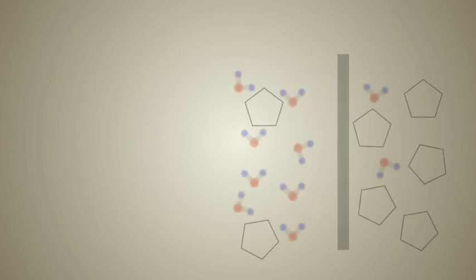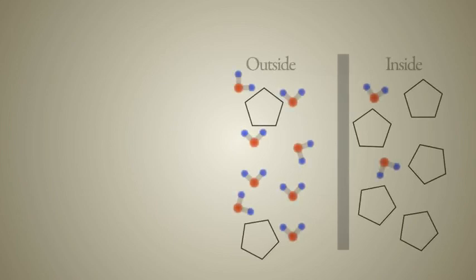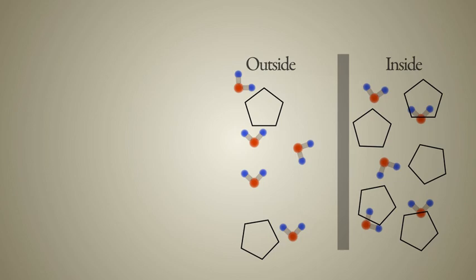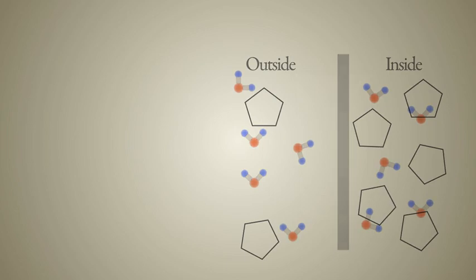With cells, diffusion occurs based on the concentration of water molecules found inside and outside the cell. If a greater concentration of water molecules are found outside of a cell than there are inside of a cell, the water molecules will diffuse across the cell membrane in order to move from an area of high concentration to an area of low concentration.